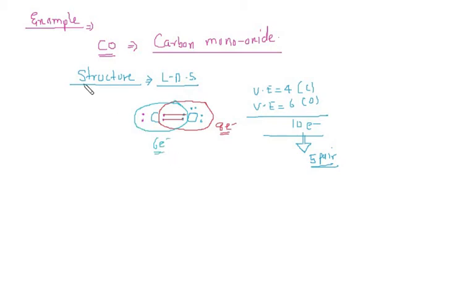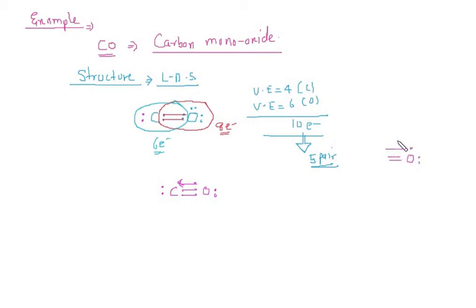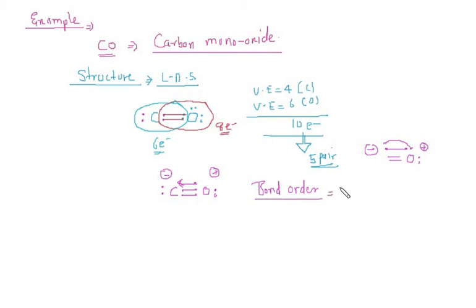To fix this, oxygen coordinates its lone pair to carbon. So carbon and oxygen are connected by two bonds, with a lone pair on carbon. Oxygen utilizes one of its lone pairs to form a coordinate bond. Since electrons move away from oxygen, oxygen gets a positive charge and carbon gets a negative charge. So the bond order of CO is 3.